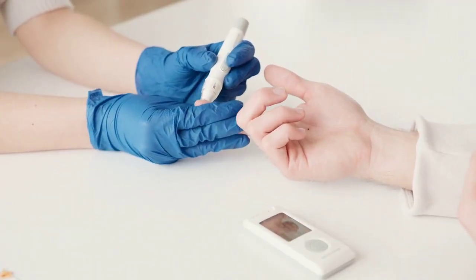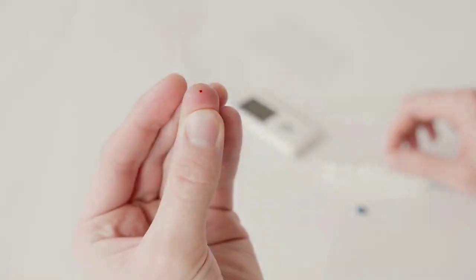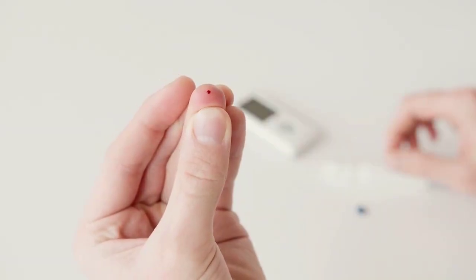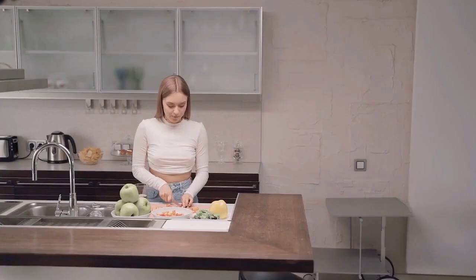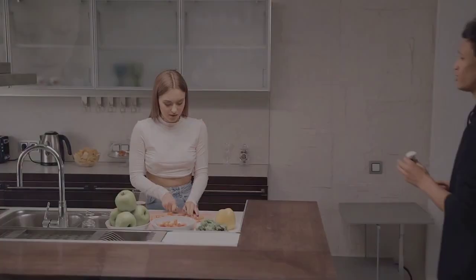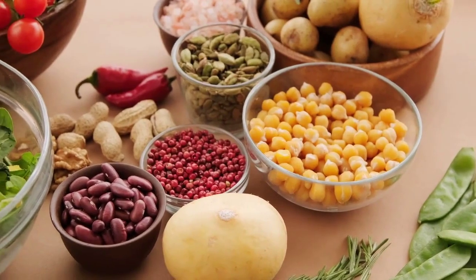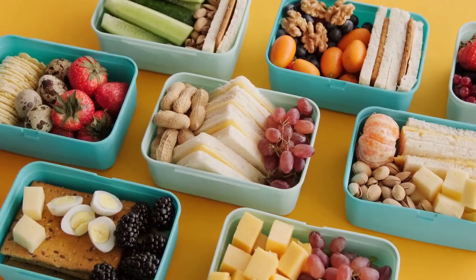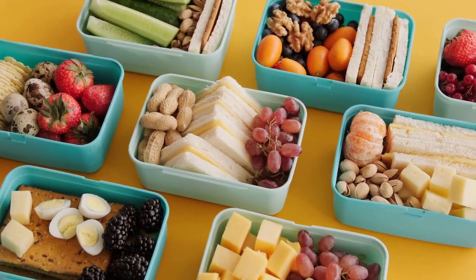Tips for choosing the right carbs for diabetes. Here are some tips for choosing the right carbs for diabetes. First, choose complex carbohydrates over simple carbohydrates. Second, eat whole grains instead of refined grains. Third, include plenty of fruits and vegetables in your diet.